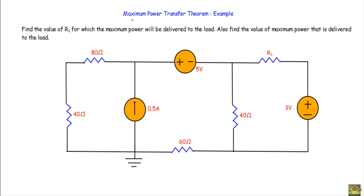In this video I will show you another example of the Maximum Power Transfer Theorem. We need to find the value of R_L for which the maximum power will be delivered to the load. Also find the value of maximum power that is delivered to the load. This is our given circuit, and this is our load resistor R_L.